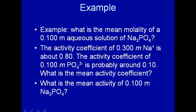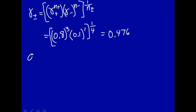And finally, let's calculate the mean activity. The mean activity was A plus minus. That was equal to gamma plus minus, which we calculated, times molality plus minus, divided by M0, raised to the N plus minus.